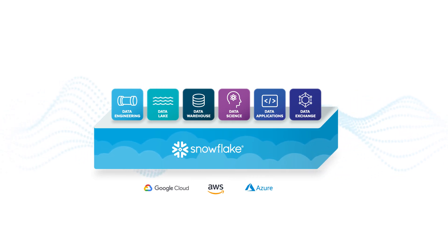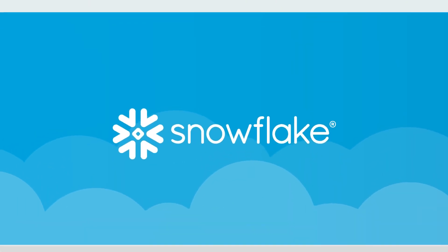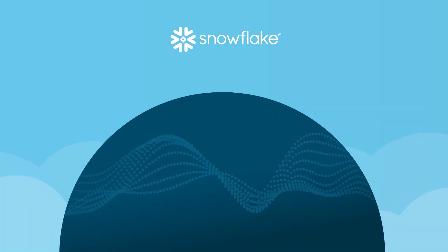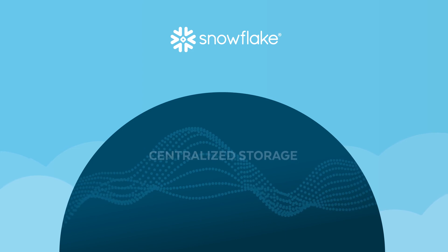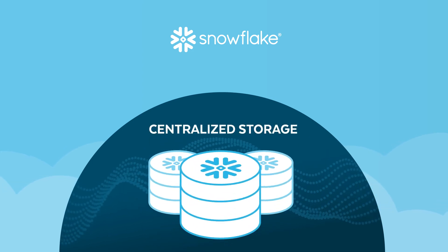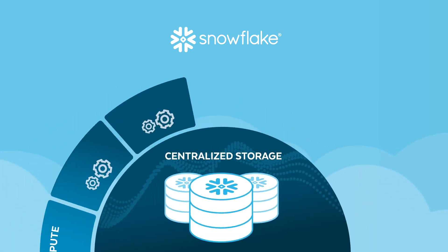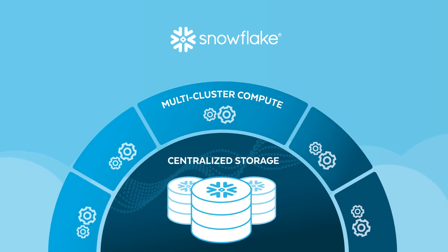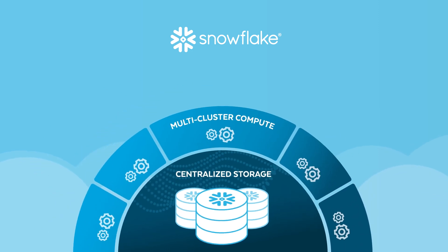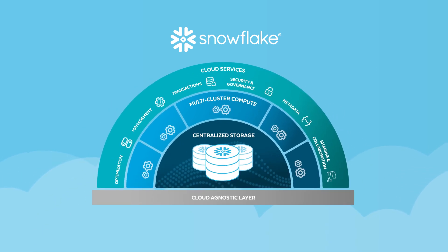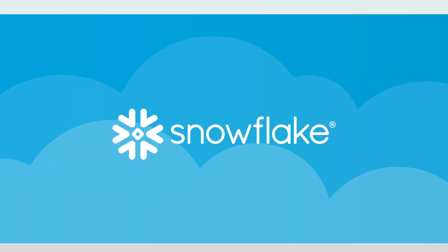What makes Snowflake unique? In one word, architecture. Built entirely from the ground up for the cloud, Snowflake's architecture is comprised of centralized storage for virtually unlimited amounts of structured and semi-structured data, multi-cluster compute for running multiple workloads without resource contention, cloud services to automate common administration, security, and database tasks, and a cloud-agnostic layer to deliver a consistent experience across cloud regions and providers.